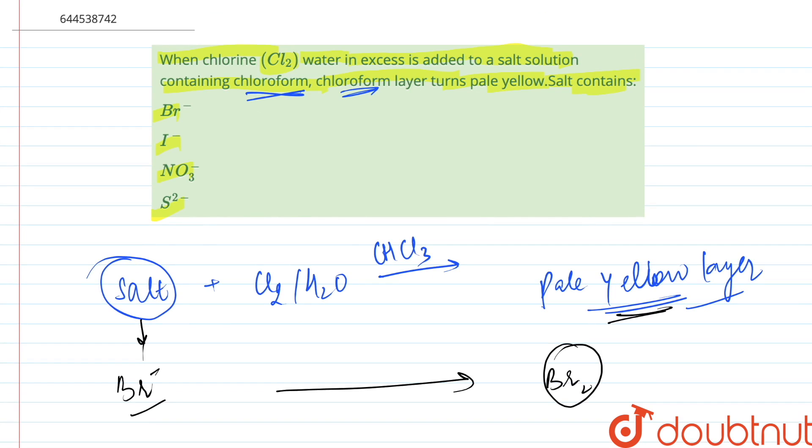Therefore, we can say the ion which should be present in the salt solution so that the chloroform layer turns pale yellow is bromide ion. This is our correct answer.